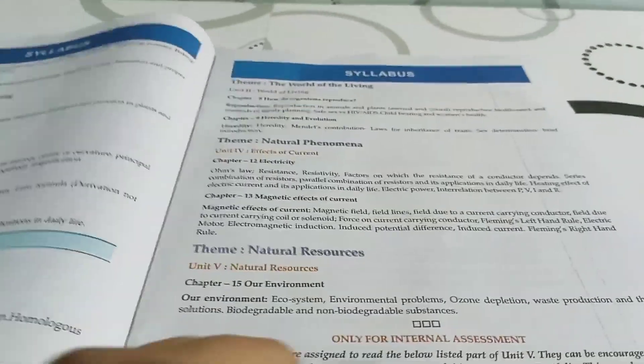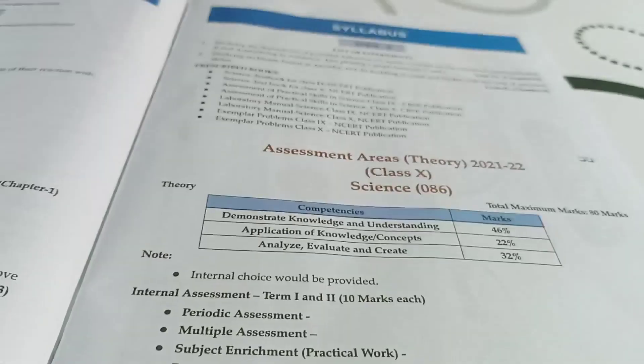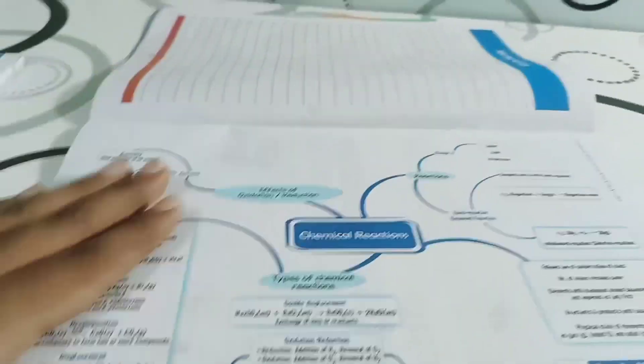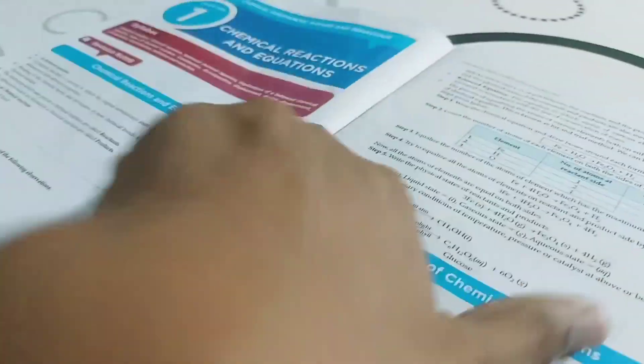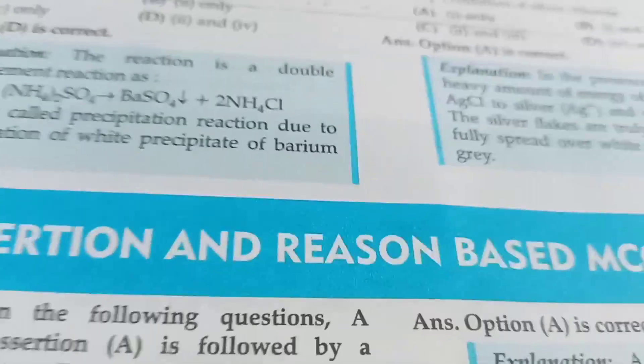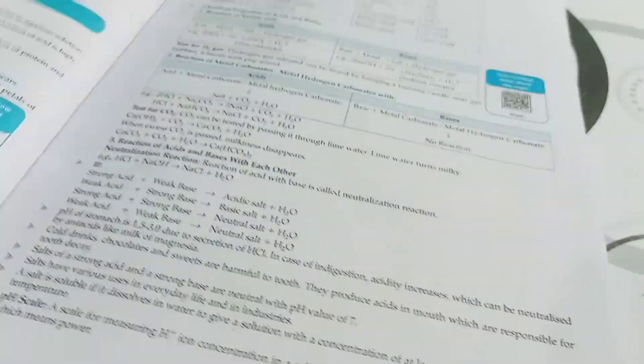This book also has syllabus and internal assessment pages, and mind maps of each chapter. After mind maps you get notes, then standalone MCQ questions with explanations, assertion-reason questions with explanations for every answer. There is also a QR code for each chapter so you can get more videos about the topic.